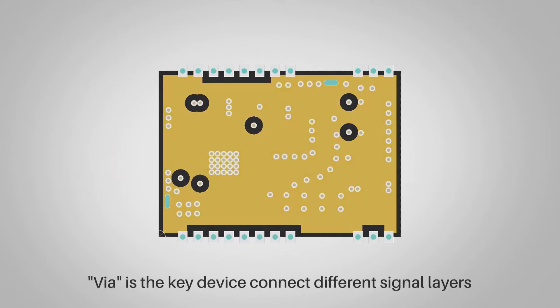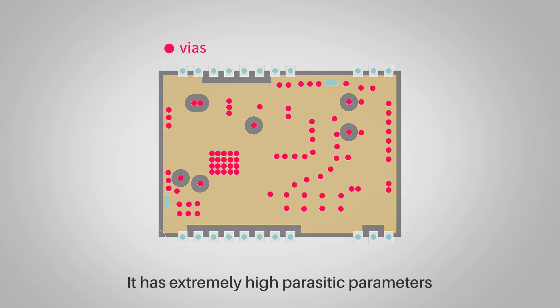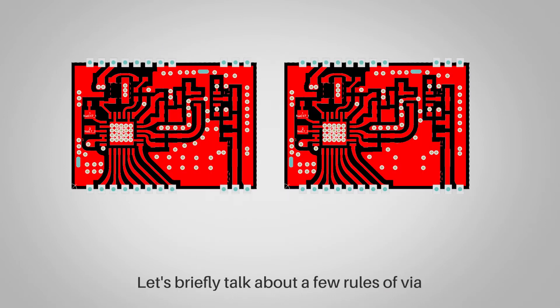Via is the key device connecting different signal layers. It has extremely high parasitic parameters, which will cause a lot of parasitic interference and problems. Let's briefly talk about a few rules of via.